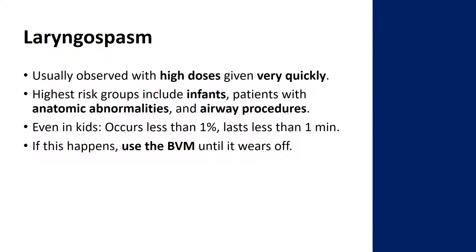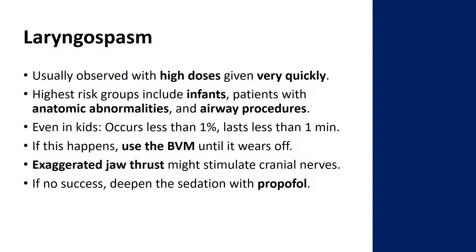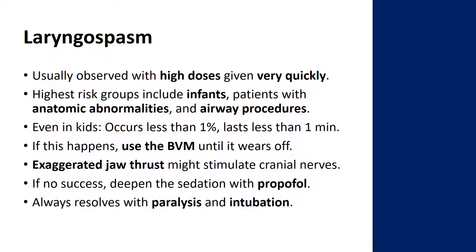If laryngospasm occurs, most sources say to use the BVM and try to blow air through the obstruction for that minute or two, and then when it wears off you should be out of the woods. Other sources describe airway maneuvers that might help — mainly an exaggerated jaw thrust, digging your fingers right at the angle of the jaw. Some say this stimulates the cranial nerves to relax the larynx and might abort the laryngospasm. If those don't work, you could deepen sedation with propofol — which is almost another plug for ketofol, getting propofol on board to mitigate some risk. If deepening with propofol doesn't work, you paralyze with succinylcholine or rocuronium, but at that point you're also obligated to intubate.